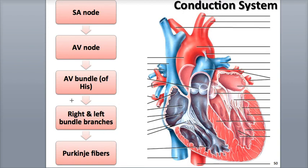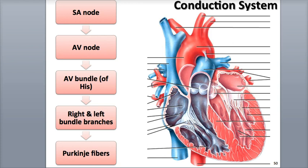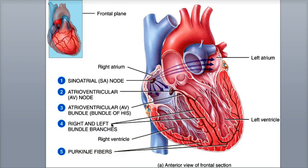The action potential next moves into the atrioventricular, or AV bundle, also called the bundle of His, where 'His' refers to tissue-like histology. The AV bundle is located at the top of the interventricular septum, which is the partition between the right and left ventricles. Action potentials are conducted from the atria to the ventricles only through the AV bundle. Next, the action potential enters both the right and left bundle branches, passing down through the interventricular septum toward the apex of the heart.